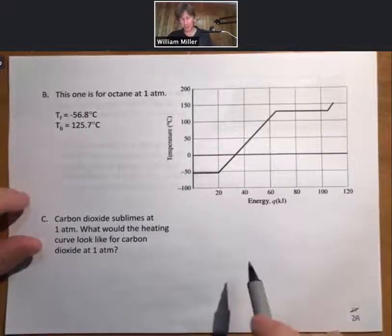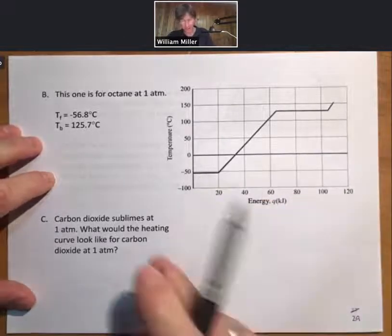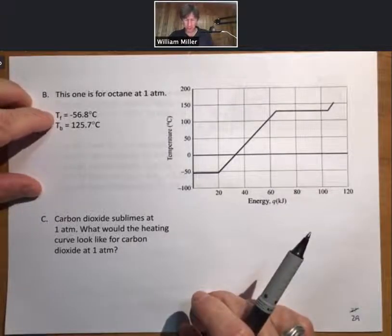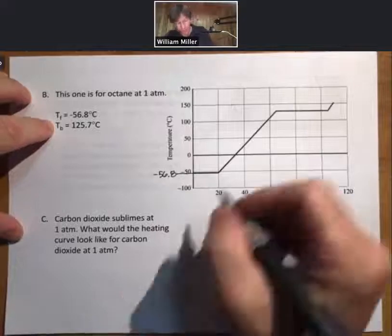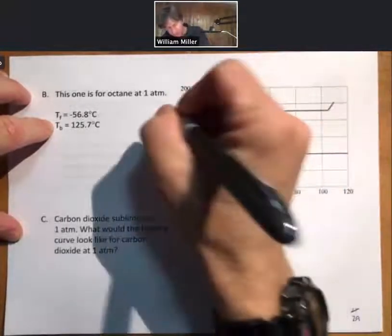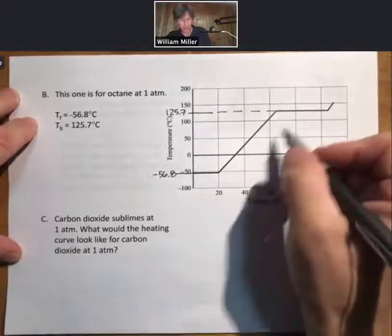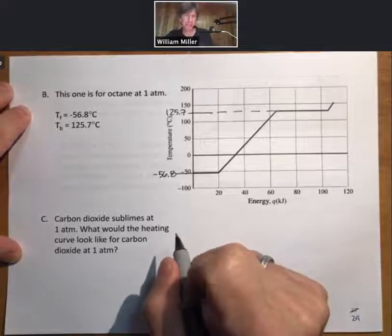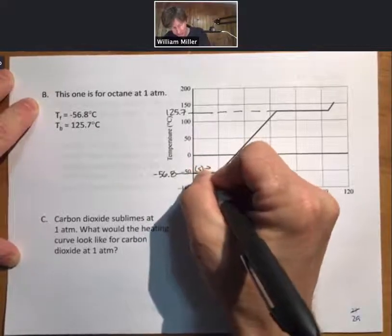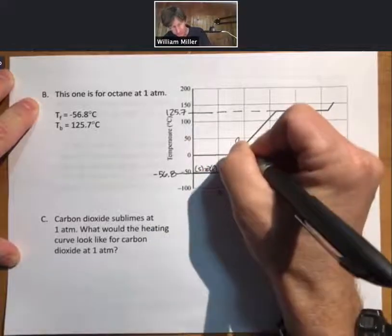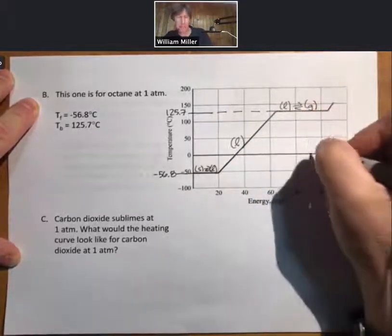This is a heating curve for octane at one atmosphere. It has only four regions. I'll note that we have the freezing point of minus 56.8 and we have the boiling point of 125.7. Because we know these are the two phase changes, we must be missing the one that's down here. This is going to be solid to liquid.